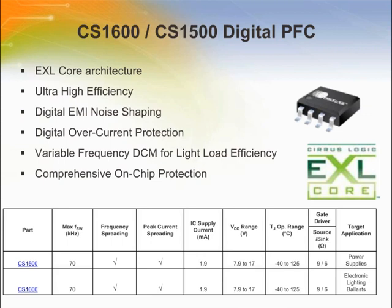The CS1500 and CS1600 are able to intelligently solve increasingly complex power management challenges. Through their digital noise shaping technology, both devices enable reduced size EMI filters, cutting the need for additional high-price components and circuitry. The CS1500 and CS1600 are digitally controlled, discontinuous conduction mode, active power factor correction ICs intended for use in power supplies rated up to 300 watts. The CS1500 is designed for laptop adapters, digital TVs, and PC power, while the CS1600 targets electronic lighting ballasts.